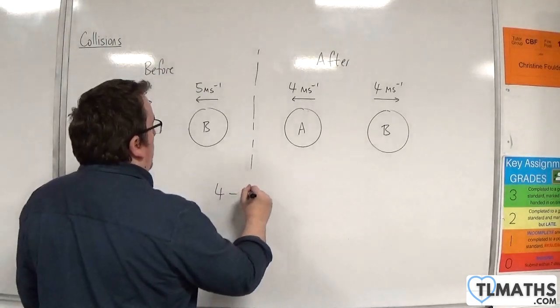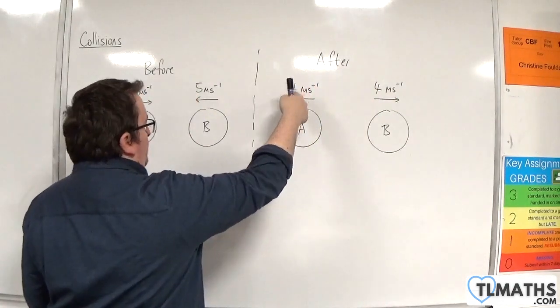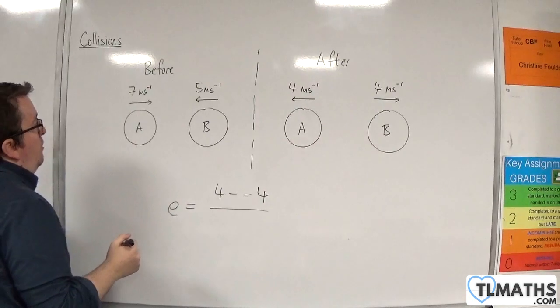which will be 4 take away minus 4, so 4 take away negative 4, divided by the speed of approach,